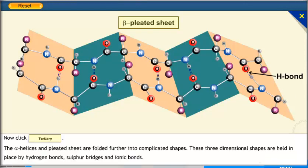Now click the tertiary button. The alpha helices and pleated sheets are folded further into complicated shapes. These three-dimensional shapes are held in place by hydrogen bonds, sulfur bridges, and ionic bonds.